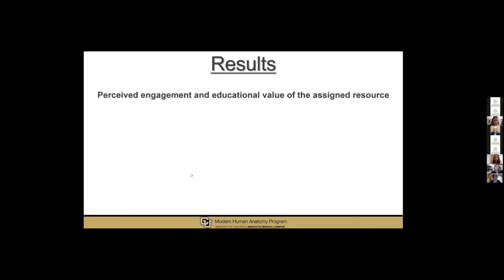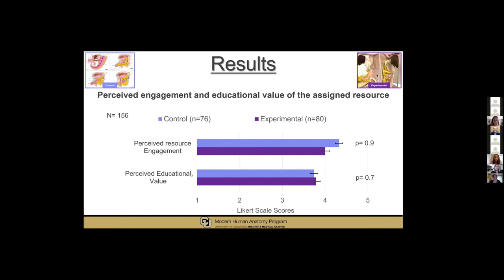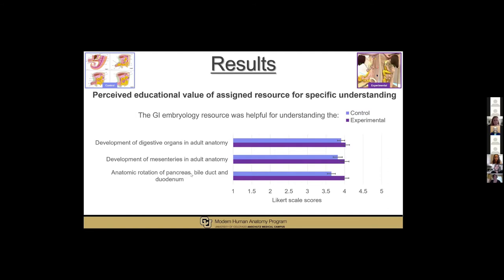In terms of perceived engagement and educational value of the assigned resource, both groups rated their resource high with no significant difference between the groups. Additional analysis showed that students felt the resource was helpful for understanding three main concepts in adult anatomy: the development of digestive organs, the development of mesenteries, and the anatomic rotation of the pancreas, bile duct, and duodenum. Even though we saw higher trends in the experimental group, there was no significant difference between the groups or items, suggesting that both resources were equally helpful for understanding these concepts.